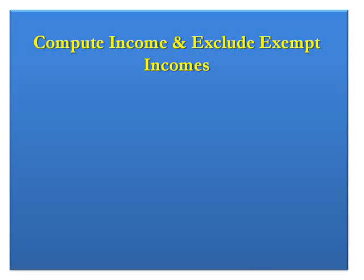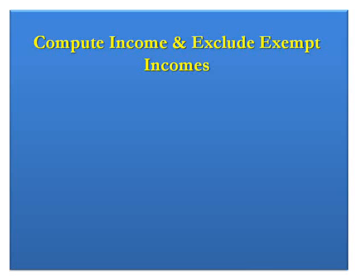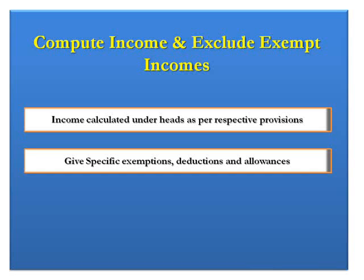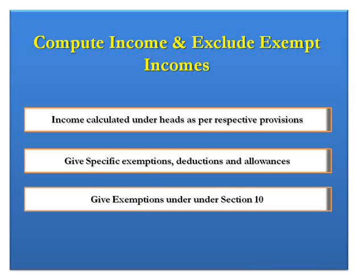The method of calculation of income is different under different heads. After classifying income, the next step is to calculate taxable income under the respective heads based on the prescribed methods. Each head has different exemptions, allowances, and deductions, which should be applied while calculating these incomes. Further, there are specific exemptions allowed under Section 10 which should be given while calculating taxable income under these heads.